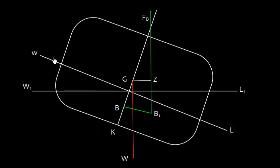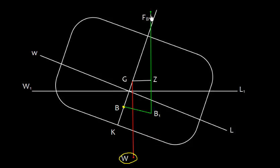Now let us examine the scenario where the vessel is heeled. The center of gravity G acts vertically downward. When the ship was upright, the center of buoyancy was in one position, but when the vessel inclines, there is a new center of buoyancy and the buoyancy force acts vertically upward in a new direction. The horizontal distance between these two forces is GZ, which is the righting lever.